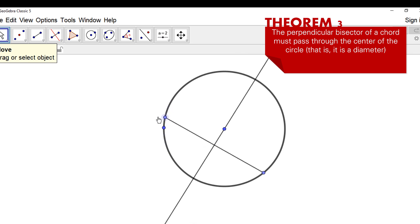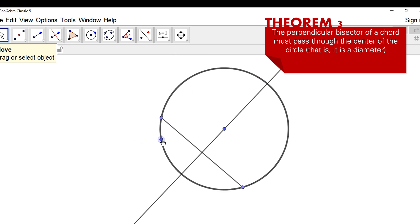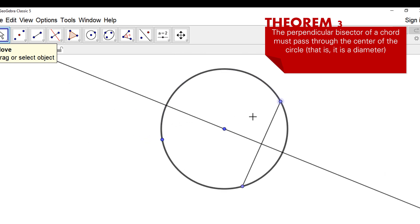When I move it, it will still pass through the center of the circle. Even if I change the size of the circle, it will still pass through the center of the circle. That's theorem number three.